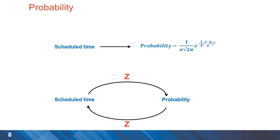A normal distribution or bell curve can be drawn using two factors: standard deviation (sigma) and mean value (mu). There is a formula that gives us the probability based on sigma and mu. Fortunately, statisticians have created tables for quicker calculations, and the z-score is an intermediate value we can use to calculate the probability in any bell curve or normal distribution.